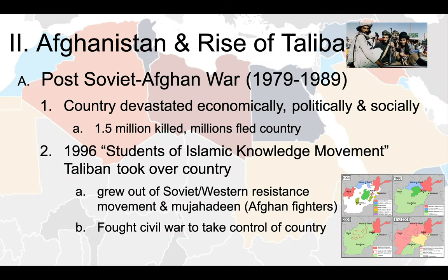Let's move east and talk about the rise of the Taliban. Following the post-Soviet-Afghan war, Afghanistan was completely devastated — millions had died, millions had left the country — leaving political, economic, and social disarray. That created a power vacuum for the Students of Islamic Knowledge Movement, also called the Taliban, to take over. The Taliban grew out of the Soviet-Afghan war and the Mujahideen — Afghan fighters trained by the Americans. They saw the war as a holy war to expel the Soviets. When that war ended, they fought a civil war, successfully taking over the country by 1996.